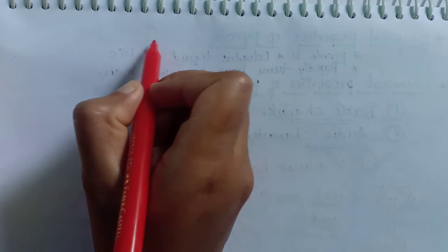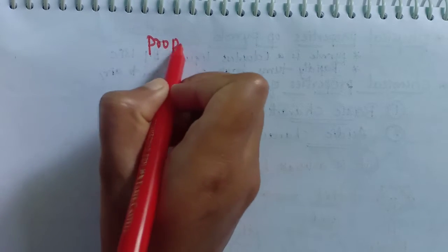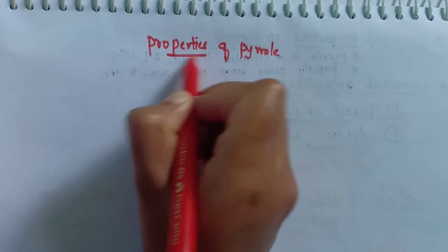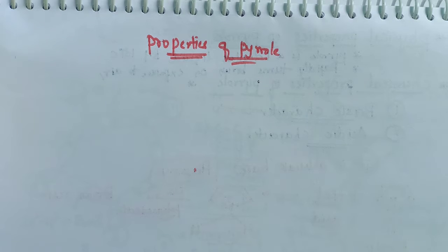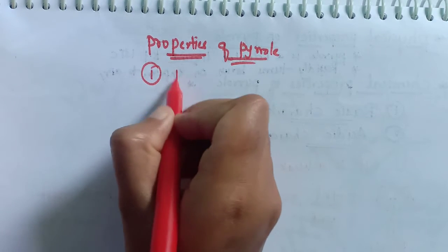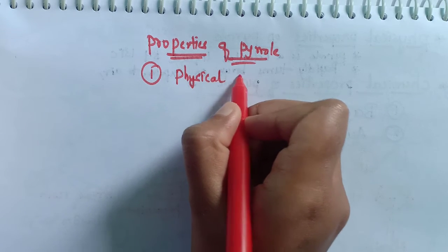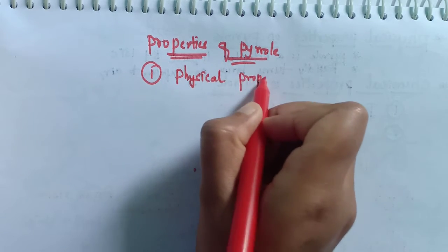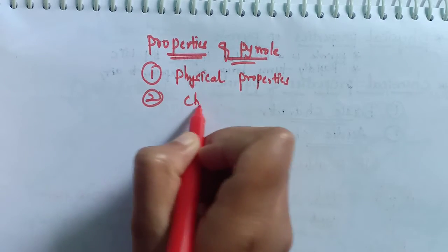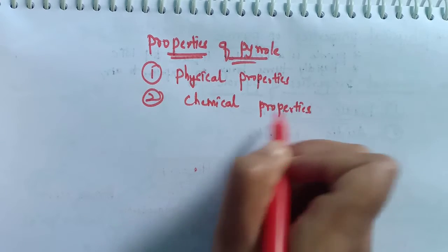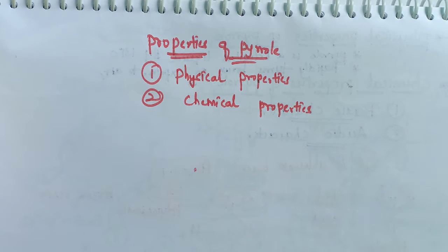Welcome back to our channel. In this video we are going to learn about the properties of pyrrole. I'm going to answer the very important question of why pyrrole is a weak base and also a weak acid. We will study it under two categories: physical properties and chemical properties. In the chemical properties we are going to study the basic character and acidic character of pyrrole.